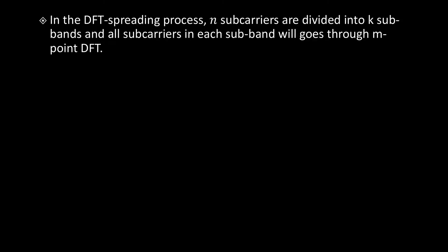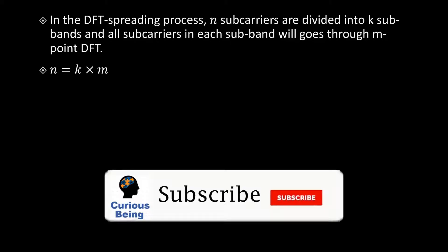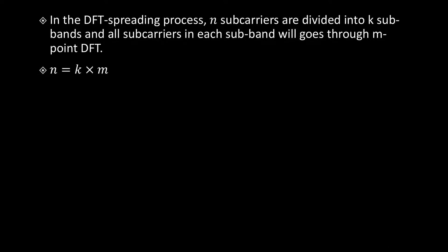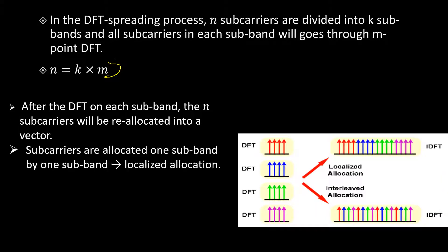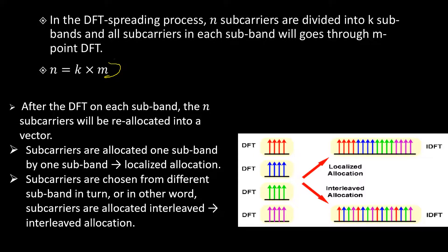To summarize: DFT is a spreading process and subcarriers are divided into K subbands. All subcarriers in each subband go through an M-point DFT. In that case N equals K times M. After the DFT on each subband, the N subcarriers will be reallocated into a vector, and subcarriers are allocated one subband at a time or in an interleaved fashion. This summarizes the DFT process and the subcarrier allocation process.